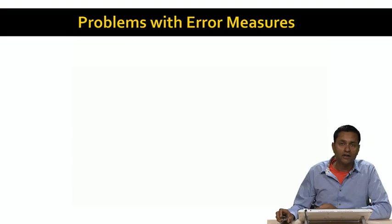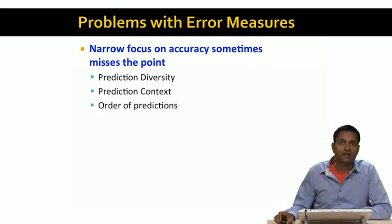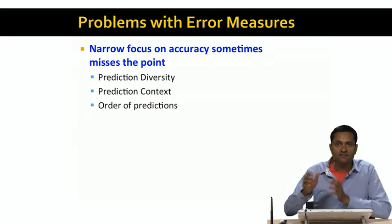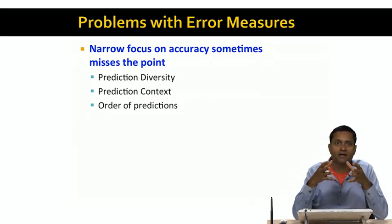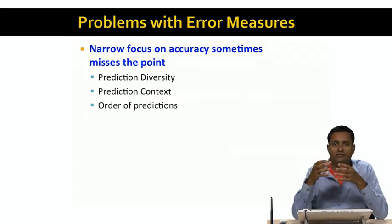Now, while RMSE is a very simple measure, it does have a few problems. One of the most common problems is that this narrow focus on accuracy or RMSE sometimes misses the point of why we implement recommender systems in the first place. Remember, the goal of recommender system is not really to predict the rating of a user for a given item,